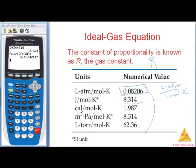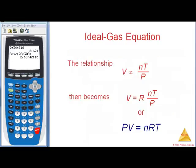If you're dealing with energy and need joules, R switches to 8.314. Always make sure that when using R = 0.08206, your volume is in liters, your pressure is in atmospheres, and your temperature is in Kelvin. That gives us the equation PV = nRT — also known as Pivner.